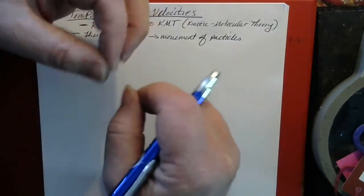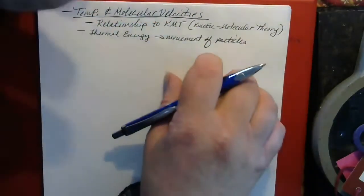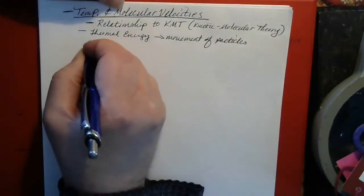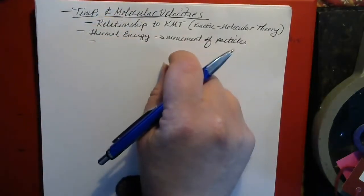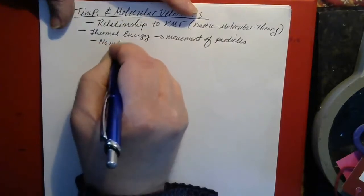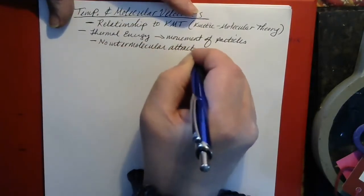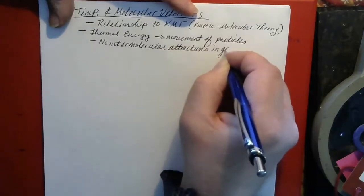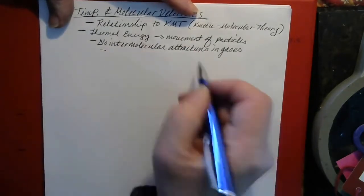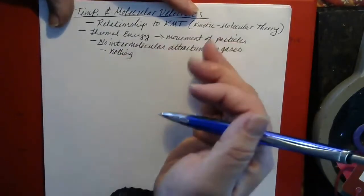In liquids, particles are able to move around and past one another to some extent with some resistance because they're so close together, but they're also vibrating in place. In gases, the particles are very free to move because there are no intermolecular attractions — so there's nothing to hold the particles that make up a gas back.